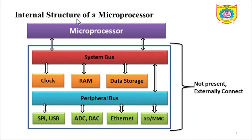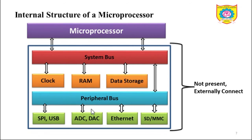Now let us see the internal structure of a microprocessor. In a microprocessor, peripherals such as memories, ADC, DAC, USB, and Ethernet are not internally present. If you want to use a microprocessor for a particular application, you have to externally connect these peripherals. But in case of a microcontroller, these peripherals are inbuilt — meaning internally present. That is the structural difference between the microprocessor and the microcontroller.